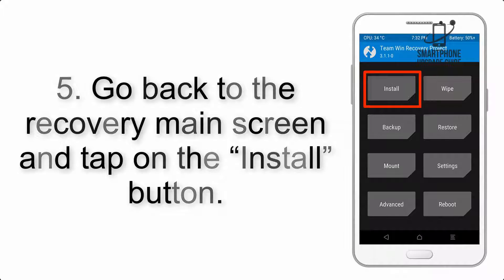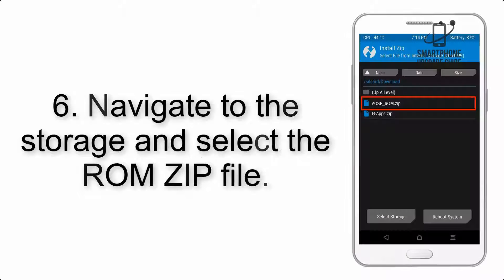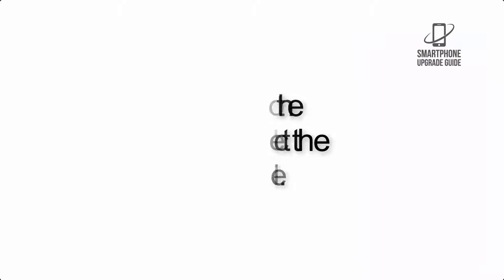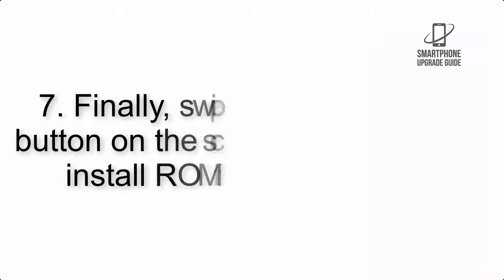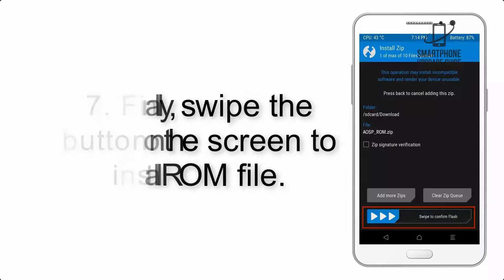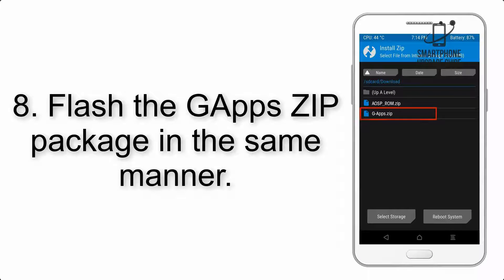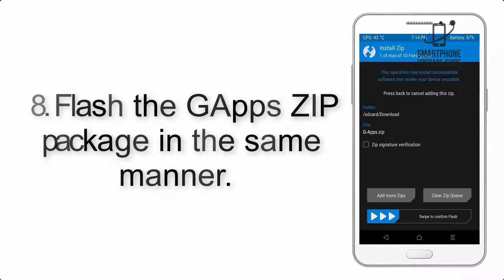Step 5: Go back to the recovery main screen and tap on the Install button. Step 6: Navigate to the storage and select the ROM zip file. Step 7: Swipe the button on the screen to install the ROM file.